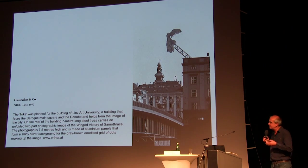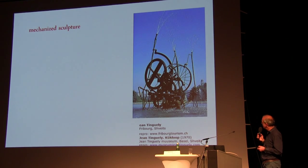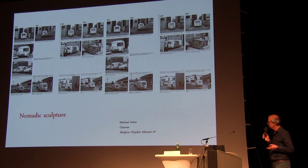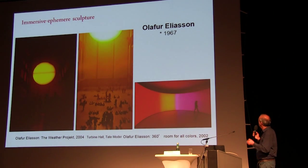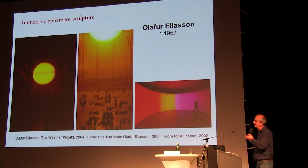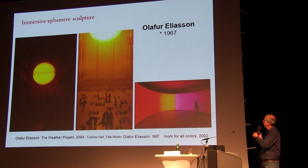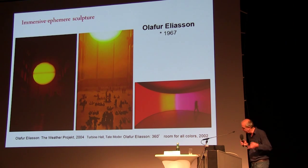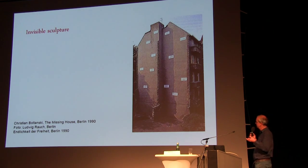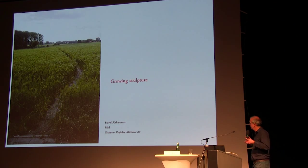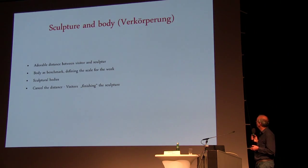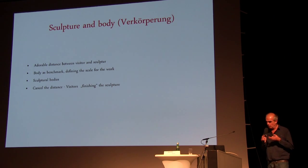Another way of getting into space and time is the idea of nomadic sculpture, like the beautiful project from Asher for Münster. Another way is to dematerialize a sculpture — changing the kind of material — for example these kinds of immersive projects, or the invisible sculpture like the beautiful project from Bordiansk in the 90s in Berlin. Another strategy would be like a growing aspect, like the Pavel Althammer piece from the last Münster. These are all strategies to get into a kind of expanded idea of sculpture.